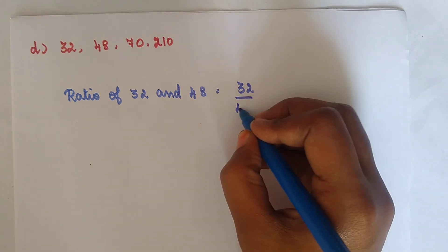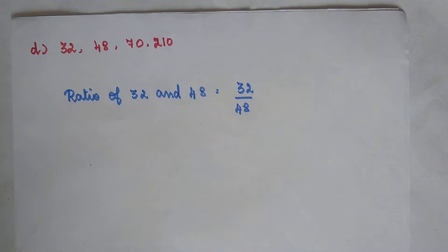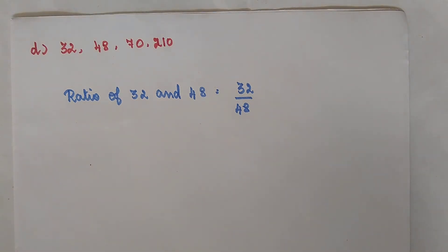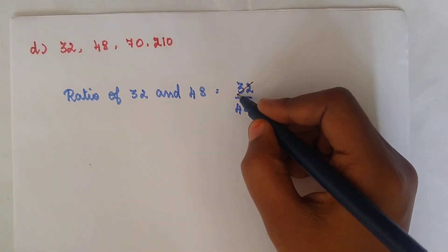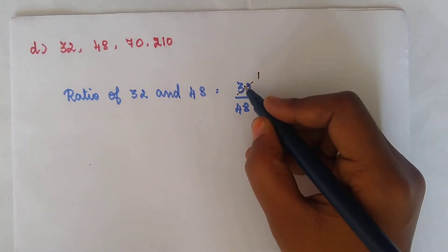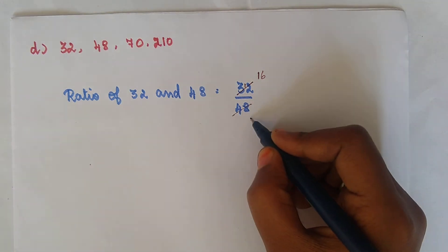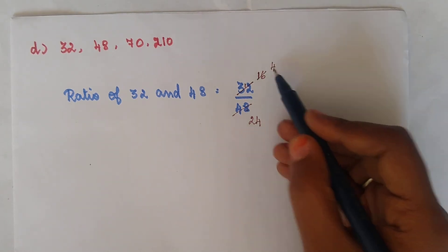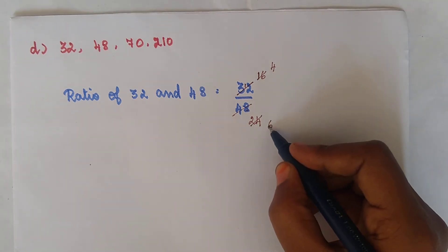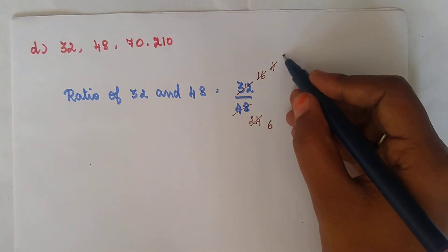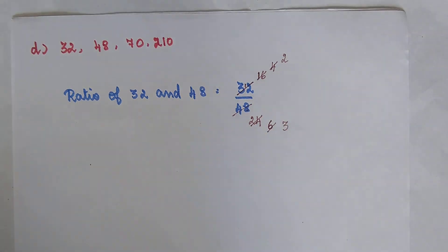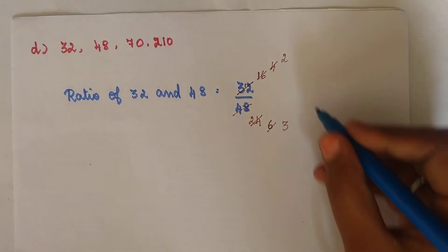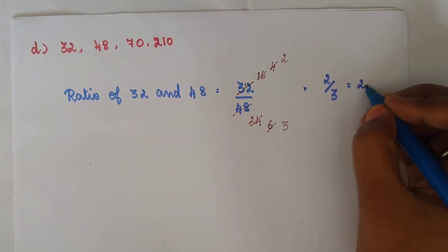32 divided by 48. We cancel step by step: dividing by 2 gives 16 over 24, dividing by 4 gives 4 over 6, dividing by 2 gives 2 over 3. Since it is not further reducible, we get 2 by 3, which we write as 2 is to 3. This is the ratio of 32 and 48.